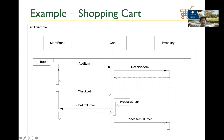From the storefront you can add an item to the cart, which reserves it from inventory. You can run this whole loop back and forth. Once you're done, you trigger and activate the checkout process, process the order, confirm the order, and then update the inventory. It's a really clear way to show the high-level sequence of the whole workflow.